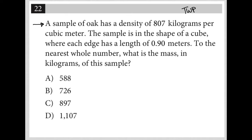The first sentence says a sample of oak has a density of 807 kilograms per cubic meter. So D for density of oak is equal to 807, and I'll write it kg per meters cubed, which is cubic meter.